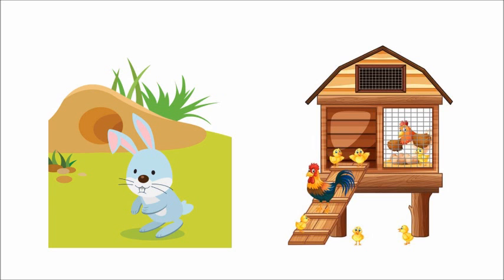Now we are going to see different types of homes for different animals. Animal homes have different names. The first one is burrow. You can see there is a hole in the mud. Some animals dig and make a big hole in the mud — that is a burrow. Rabbit lives in a burrow.